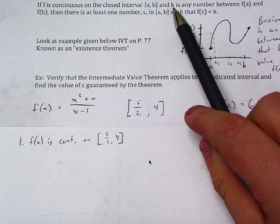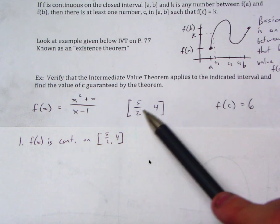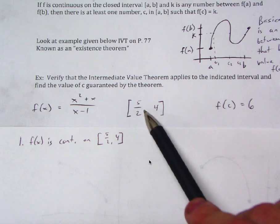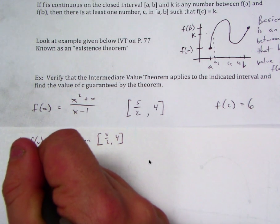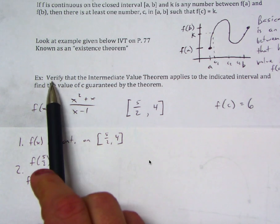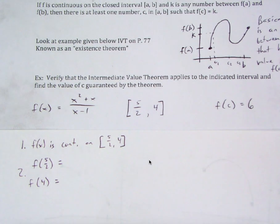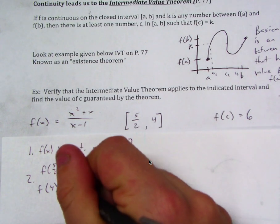Condition 2 says the Y value in question needs to be between F of A and F of B. Our Y value in question here is 6 — we need 6 to be between the Y values of these endpoints. So we plug each endpoint into the function to find those Y values. Let's find F of 5 halves and F of 4. Whenever a problem says verify, that means it is true — they just want your math to prove it. F of 5 halves is 5.833 and F of 4 is 6.667.